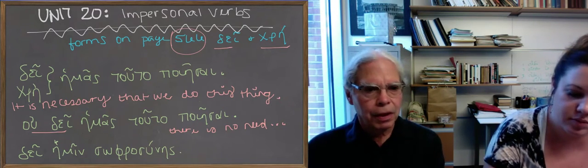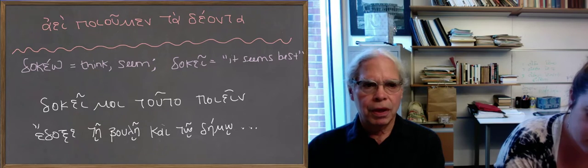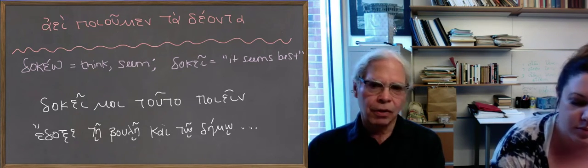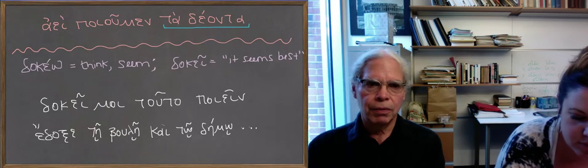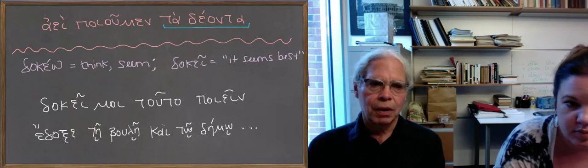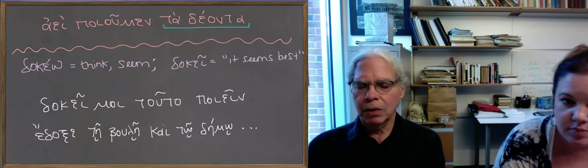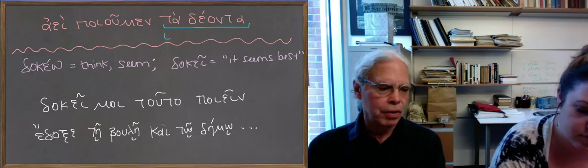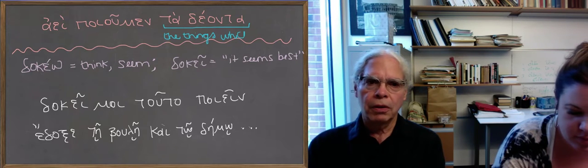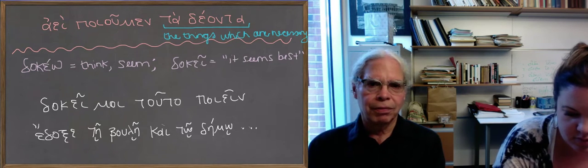The last example involving these words is the one at the top of this page, where the sentence ἀεὶ ποιοῦμεν τὰ δέοντα. τὰ δέοντα is just an attributive participle, neuter, nominative or accusative, plural. In this case, it's accusative because we have a subject expressed in the verb. ἀεὶ ποιοῦμεν, we are always doing, and what τὰ δέοντα means is the things which are necessary. So it's an important concept, τὰ δέοντα, or τὸ δέον, that which is necessary in Greek philosophy and otherwise in real life.